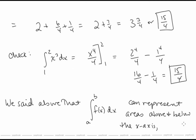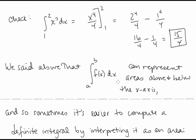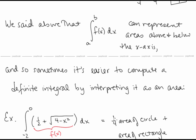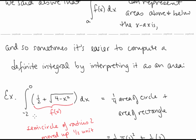We said the definite integral can represent areas above and below the x-axis, and sometimes it's easier to compute a definite integral by interpreting it geometrically. For example, the integral from negative 2 to 0 of one half plus the square root of 4 minus x squared, dx. If we tried to set this up as a limit, we'd have trouble because of the radical — there are no summation rules to handle it.